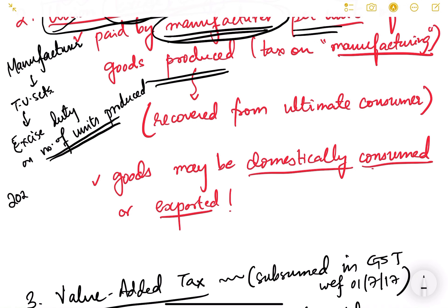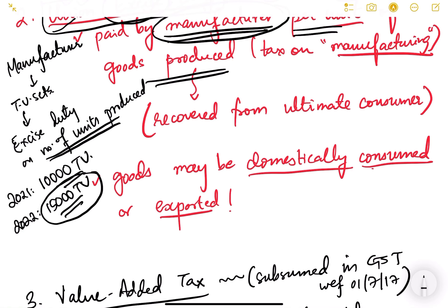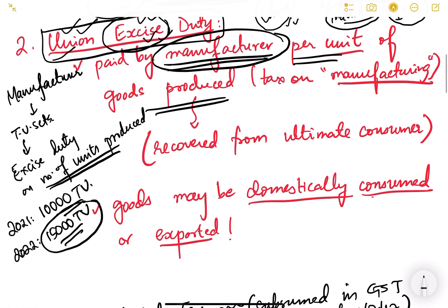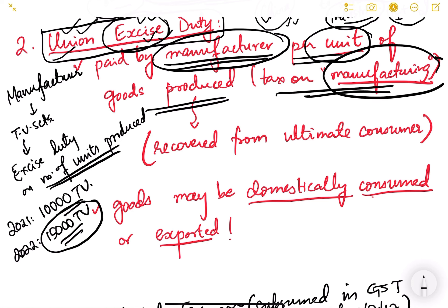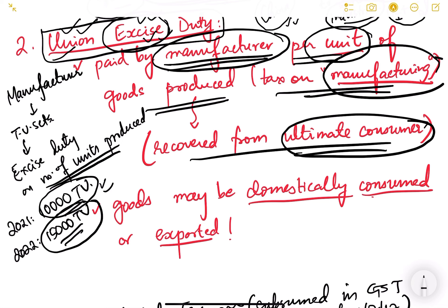For example, if in 2021 he produces 10,000 TV sets, he will pay excise duty on 10,000 sets. If in 2022 his production increases to 15,000 TV sets, he pays excise duty on 15,000 sets. It is not a flat duty on one factory; it is dependent on the number of units produced. So it is a tax on manufacturing, per unit of goods produced.